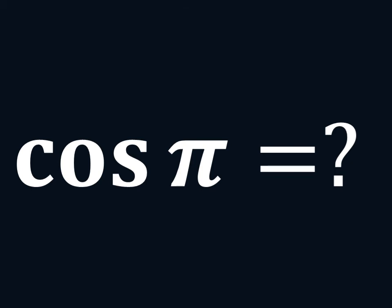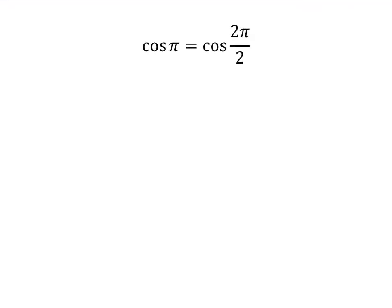In this video, we will learn to find the value of cosine of pi. As pi is equal to 2 times half of pi, so cosine of pi is equal to cosine of 2 times half of pi.